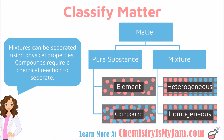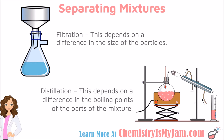Now let's talk about the major difference between mixtures and pure substances. Mixtures can be separated using physical properties — you can separate the portions of a mixture without a chemical reaction taking place. Pure substances are different: you cannot separate a pure substance using physical properties. An element cannot be separated further, and separating a compound requires a chemical reaction. Mixtures, by contrast, can be separated using physical means, such as filtration and distillation.